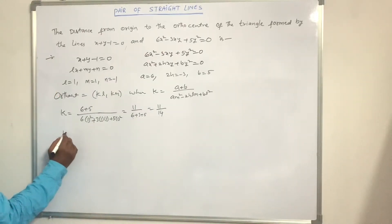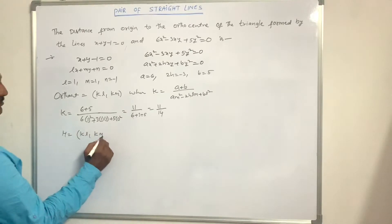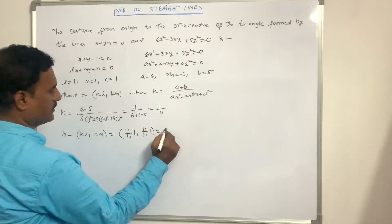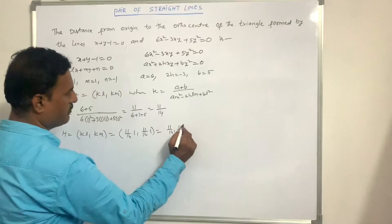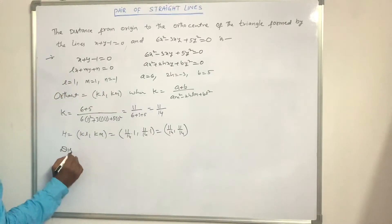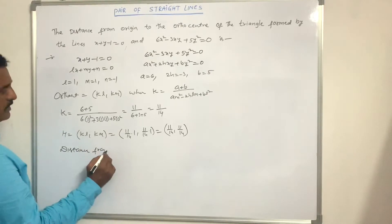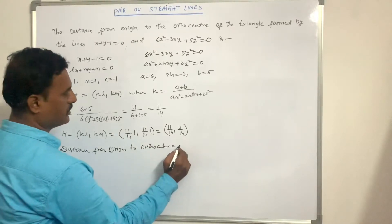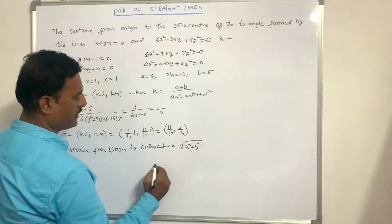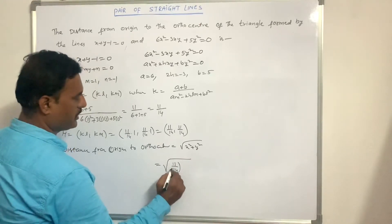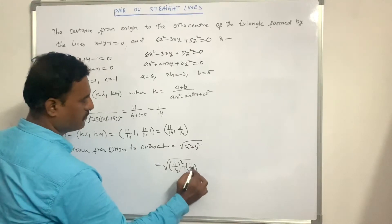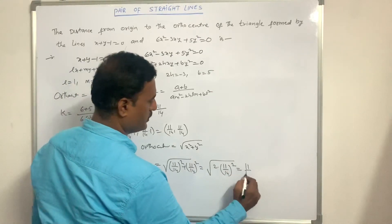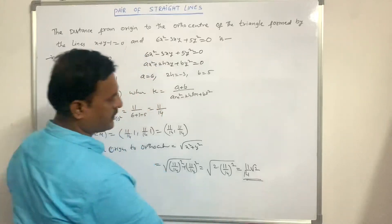The orthocenter H = (KL, KM) = (11/14 · 1, 11/14 · 1) = (11/14, 11/14). Therefore, the distance from the origin to the orthocenter equals √(x² + y²) = √((11/14)² + (11/14)²) = √(2 · (11/14)²) = (11/14)√2. This is the answer.